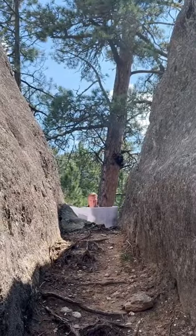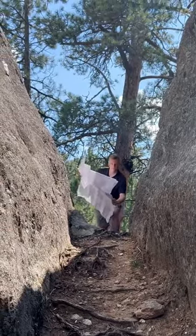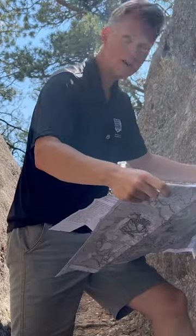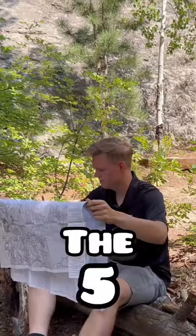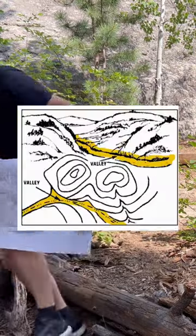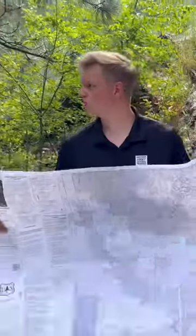Terrain association is comparing the major terrain features we can see to the terrain features on our map. The five major terrain features you can identify are hill, ridge, valley, saddle, and depression.